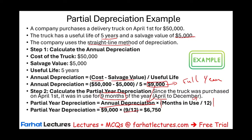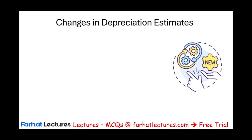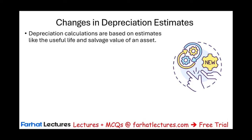The journal entry is the same as learned in the prior session: debit depreciation expense $6,750, credit accumulated depreciation $6,750 for this partial year. Now let's talk about changes in depreciation estimates. We could have new information that requires us to change our estimate, whether it's the life of the asset or its salvage value.